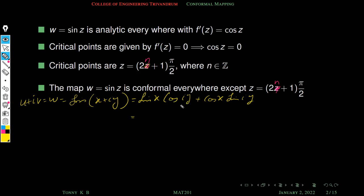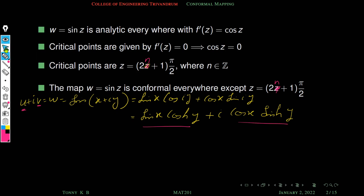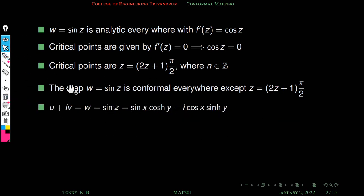Now, cos(iy) equals cosh(y) and sin(iy) equals i·sinh(y). So this expression becomes sin x·cosh(y) plus i·cos x·sinh(y). Comparing real and imaginary parts: u equals sin x·cosh(y) and v equals cos x·sinh(y). These are the real and imaginary parts of our transformation.